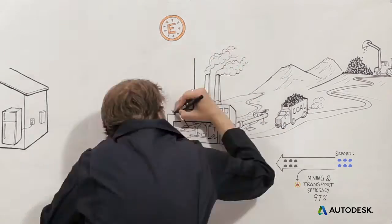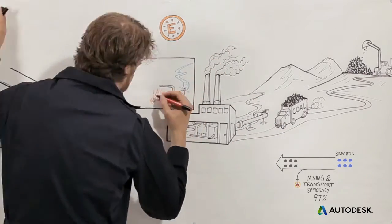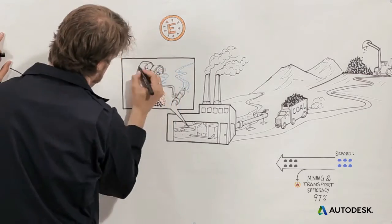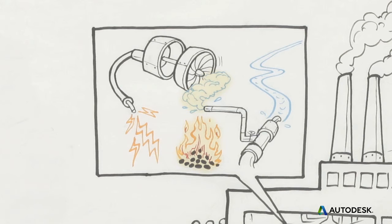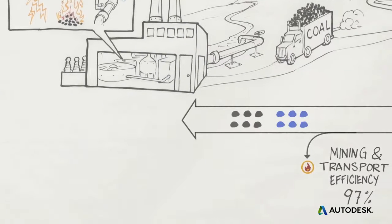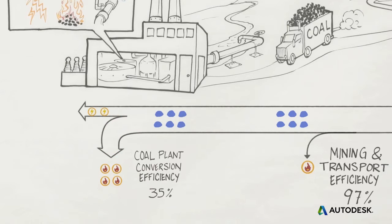Within the power plant, the coal is burned to heat water into steam, which pushes a turbine connected to an electric motor, which generates electricity. This converts coal's chemical energy to heat energy, then to mechanical energy, then to electrical energy. That's a lot of conversions, and the total efficiency is about 35%.